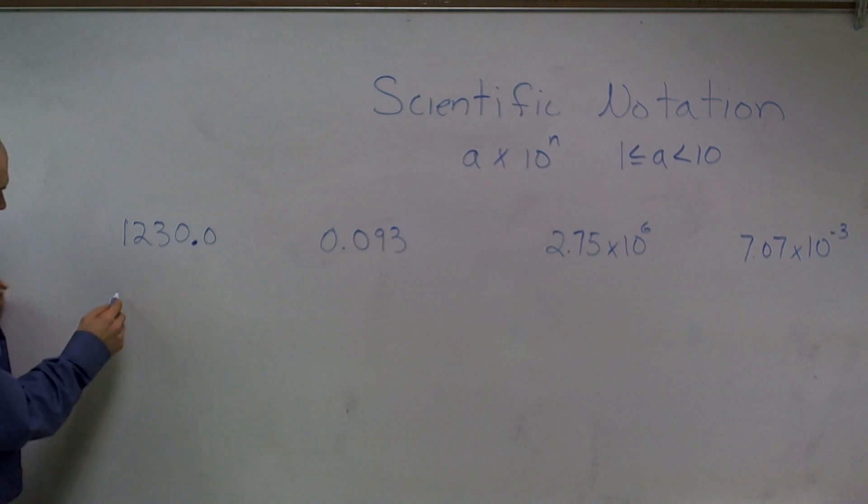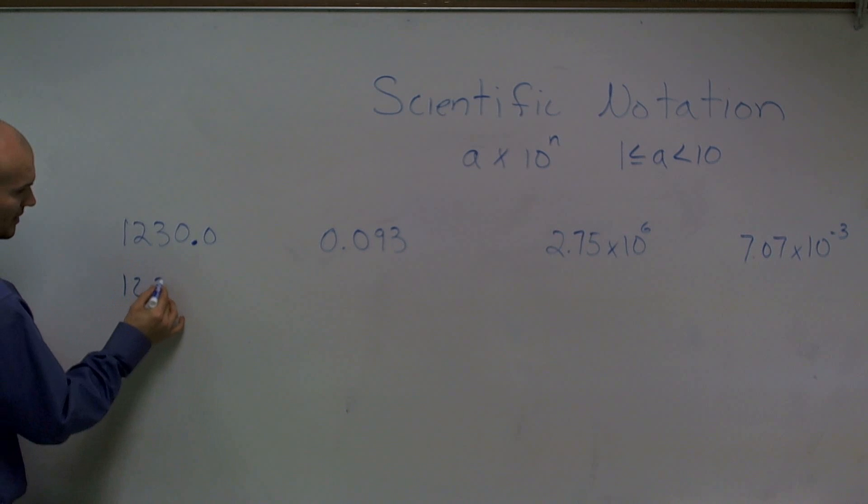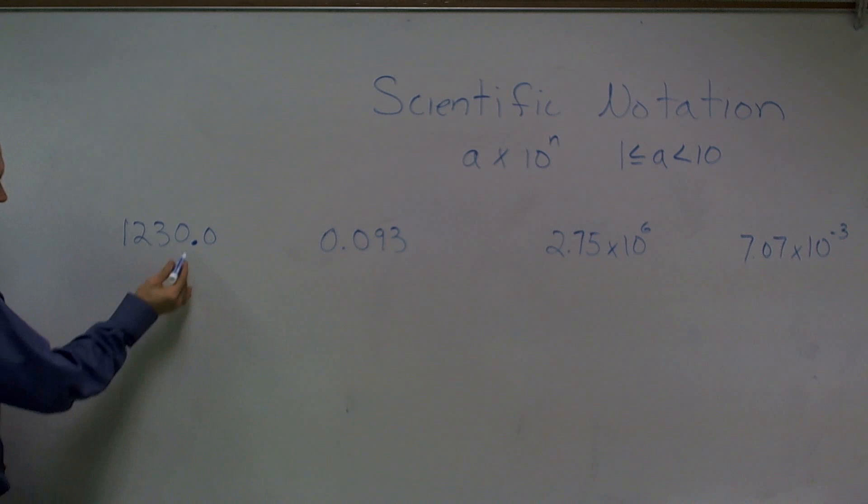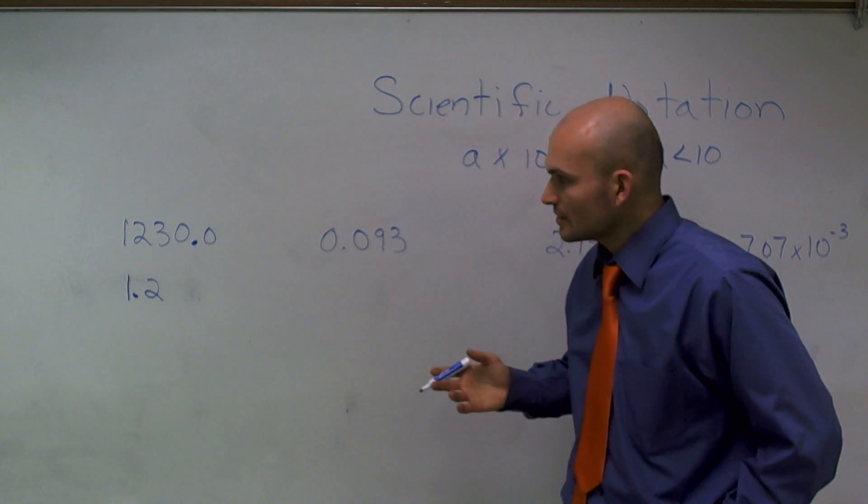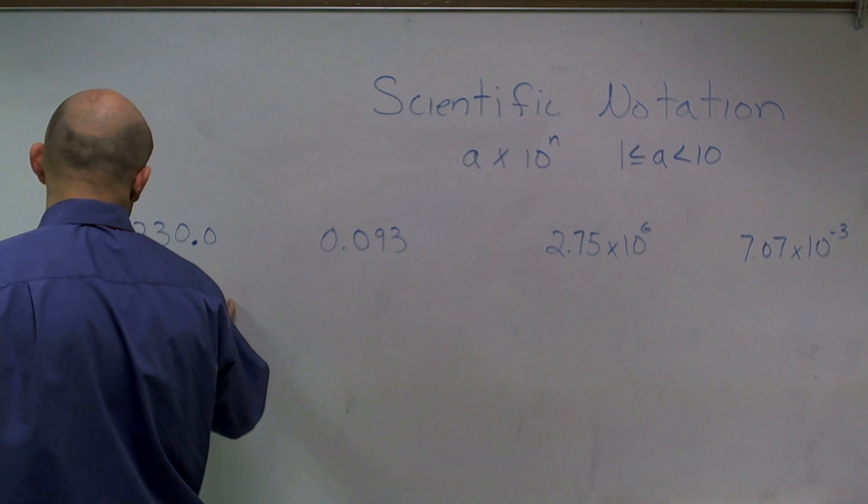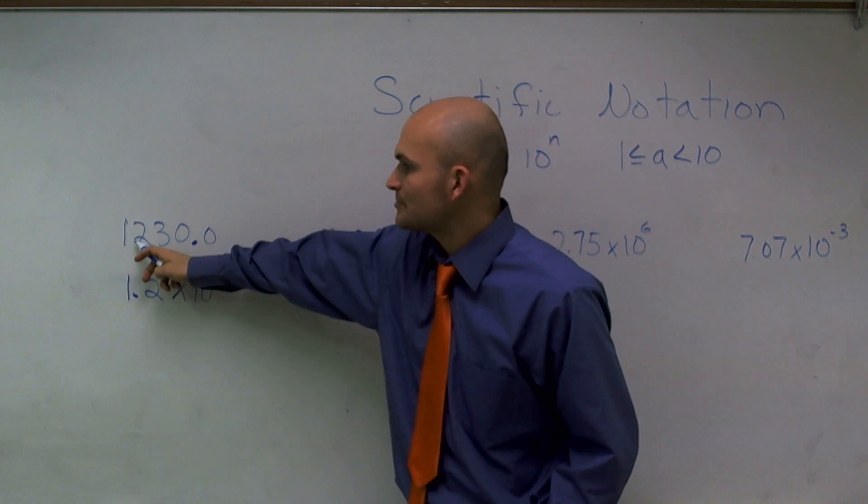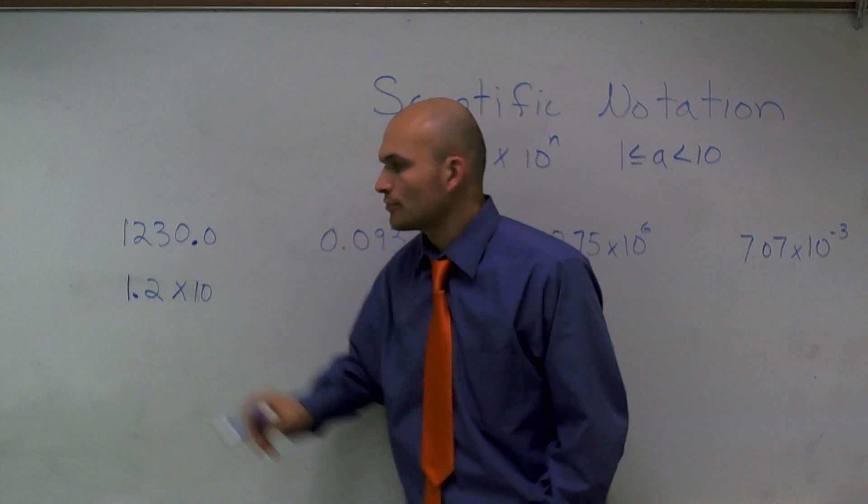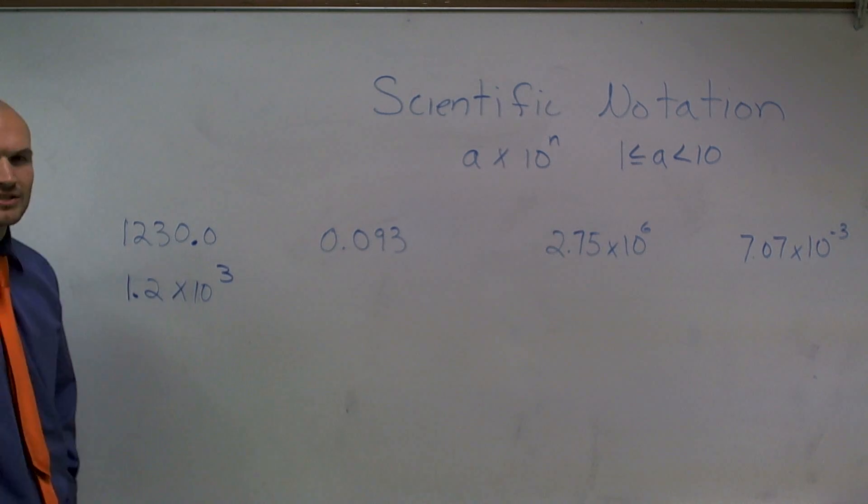So if I move my exponent to here, this number is smaller than 1. So that's not going to work. If I move it between the 2 and the 3, I have 12.3. 12.3 is not between 1 and 10 again. So therefore, I have to move my exponent between the 1 and the 2. So I have 1.23. Now, to write in scientific notation, I say times 10. Well, how many places am I going to have to move my exponent back to where it was? Well, you can see I moved it 1, 2, 3 places. So therefore, I'm going to say 1.23 times 10 to the third power is equal to 1,230.